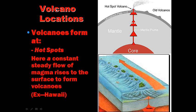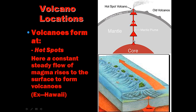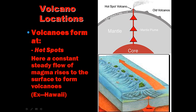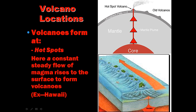The third location is a hot spot. The Hawaiian Islands formed over a hot spot in the middle of the Pacific Ocean — a constant steady flow of magma rises to the surface. Because plates move at about the rate fingernails grow, as the plate moves over the hot spot it leaves behind a chain of volcanoes that get progressively older.